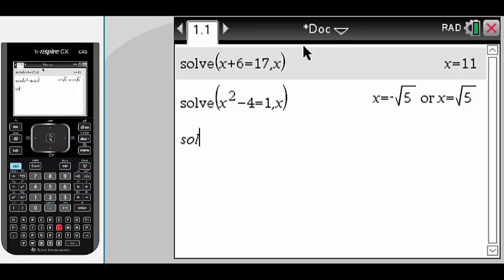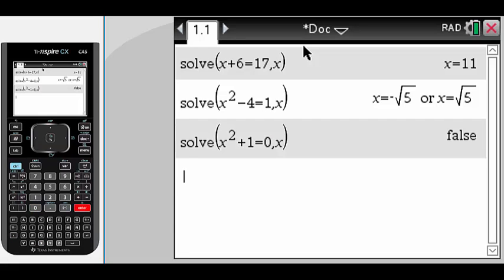Now, if we need to solve something such as x squared plus 1 equals 0 for x, if there's no answer, the result will come up as false.